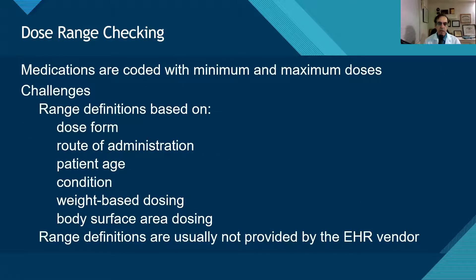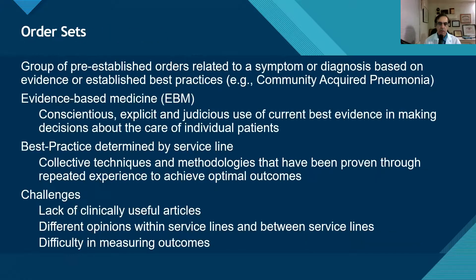With dosage range checking, this is something that usually is not provided by the EHR — the user has to build this into the system. Our pharmacy informaticists will lead teams of experts to define ranges based on many different parameters: dose form, route of administration, patient age, condition, weight-based dosing, and body surface area dosing. There are a lot of possibilities here, but even for a drug like acetaminophen, based on age and route, the dosages can vary widely, so we do have some challenges with that.